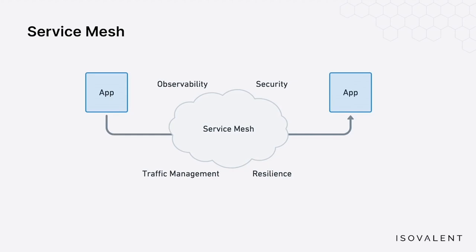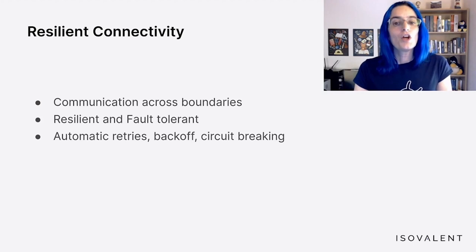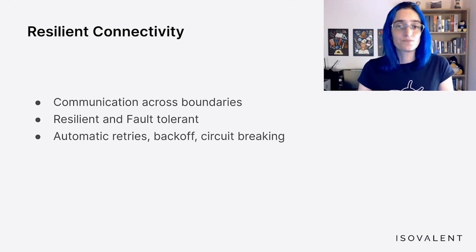So what exactly are the features that we gain when deploying a service mesh? It depends a bit on the service mesh provider, but we can split them into five basic categories. First, we have resilient connectivity, which means that service-to-service communication works across boundaries like clouds, clusters, and premises, and this communication needs to be resilient and fault-tolerant. To make this happen, the service mesh might do automatic retries and back-off, or stop sending traffic to a service that is not responding — also known as the circuit breaker pattern. In other words, the service mesh infrastructure improves the overall communication between our services.